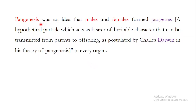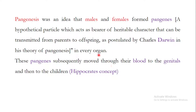Another theory was pangenesis, the idea that males and females form pangenes — hypothetical particles that act as bearers of heritable characters transmitted from parents to offspring. This theory was postulated by Charles Darwin in his theory of pangenesis. Just as Hippocrates said seeds are produced in every part of the body, pangenesis held that pangenes are produced in every organ, subsequently moving through the blood to the genitals and then to the children.